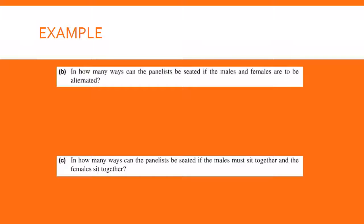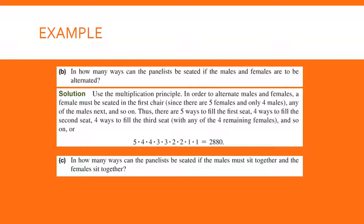For part B, we want to know how many ways they can be seated if males and females must be alternated. We have to start with females because there are five of them and only four males. There are five ways to choose the first girl, then four to choose the first boy, then four to choose the second girl, and so on, alternating down the line. That gives 2,880.